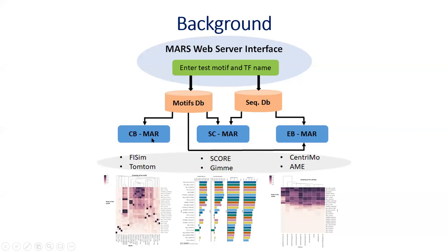For the CB-MASS, we compare the motifs available for the given transcription factor against each other to see which one is the best performing motif. For the scoring and classification MASS, we use algorithms to compare the motifs against the benchmark dataset to find which is the best performing motif. And for the enrichment-based MASS, we find which motifs are enriched against the benchmark dataset.